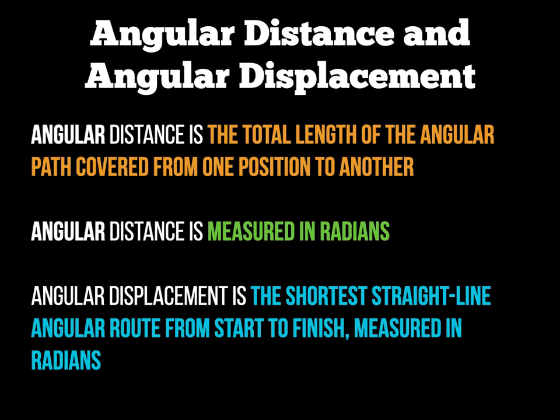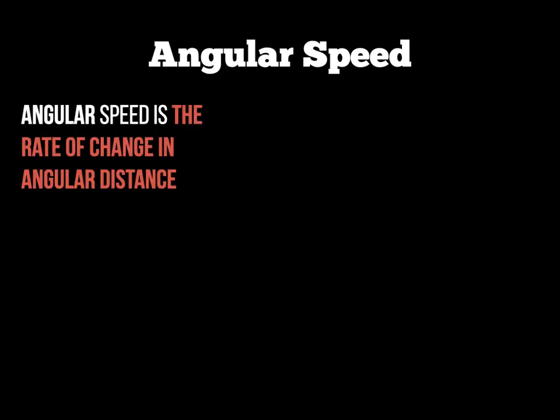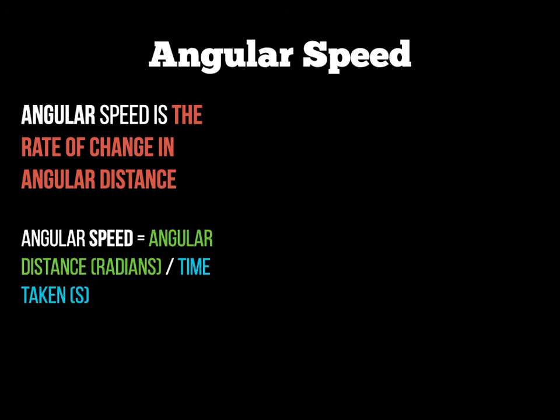We also have angular speed, which is the rate of change in angular distance. The calculation is: angular speed equals angular distance (measured in radians) divided by time taken in seconds. Angular speed is therefore measured in rads per second, combining angular distance in radians and time in seconds. For example, in an exam you might be asked to measure the angular speed of a rotating diver — the speed at which they complete a somersault rotation.